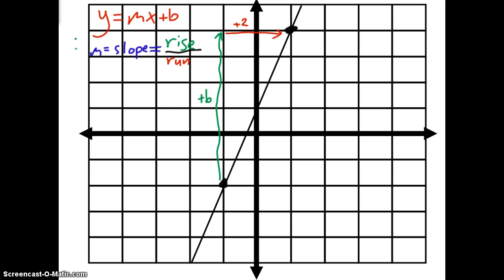So my rise was six, my run was two. I'll put that right below. So my rise was six, and my run was two. So six divided by two is equal to positive three. My rise over run was three, so my slope was three. So in my equation...